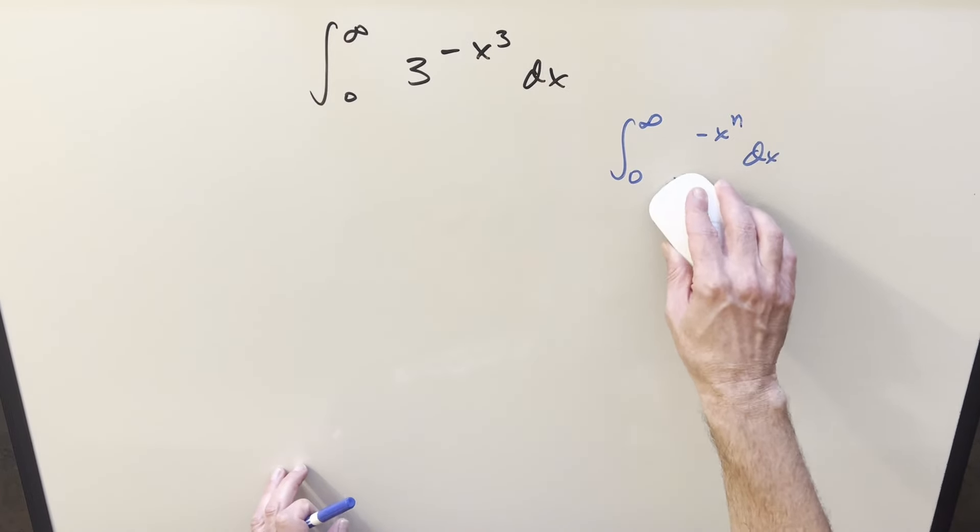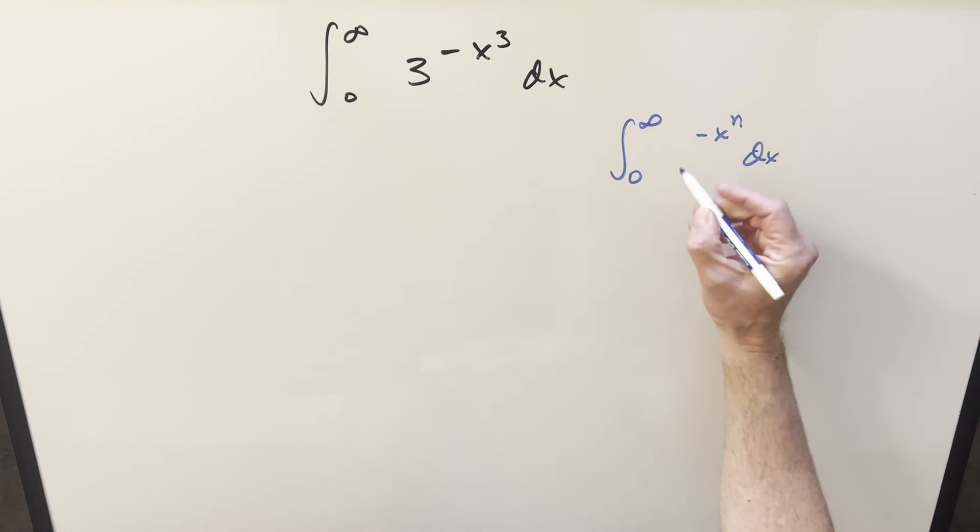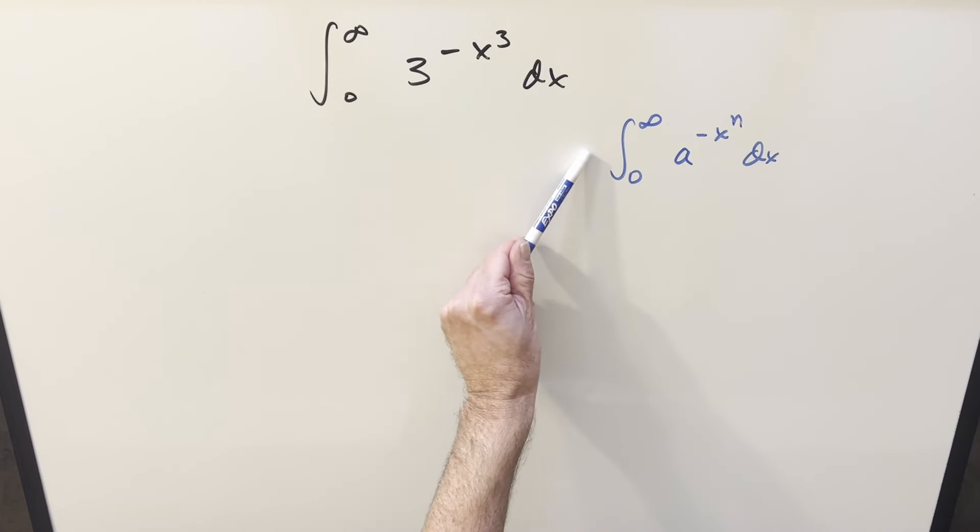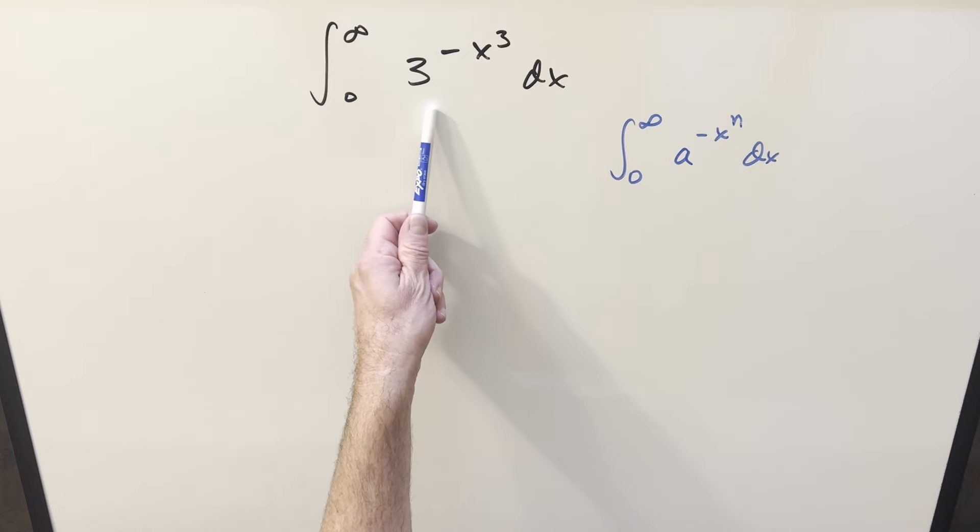So what we need is we need the value for something of a different form, like a to the minus x to the n. So what I'm thinking is, let's find the general formula for this thing. And then at the end of the video, we can come back and we can plug in 3s to it and see if we can get a decent answer.